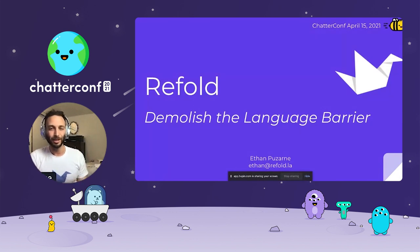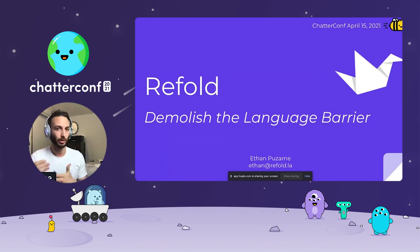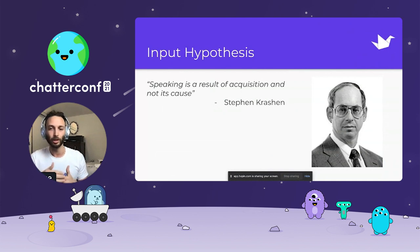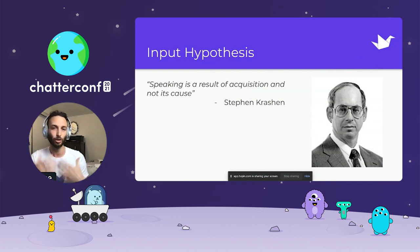Hi there. My name is Ethan. I am the CEO of Refold Languages. Our mission at Refold is to demolish the language barrier — making high-level fluency a straightforward process so that anybody can do it. Our philosophy is based on Stephen Krashen's model of language acquisition, the Comprehensible Input Hypothesis, which he published about 40 years ago. The idea is that you acquire the ability to speak a language when you understand messages in the language — this is how we all acquired our native language, developing an intuitive understanding of grammar and vocabulary rather than studying flashcards and grammar rules specifically.